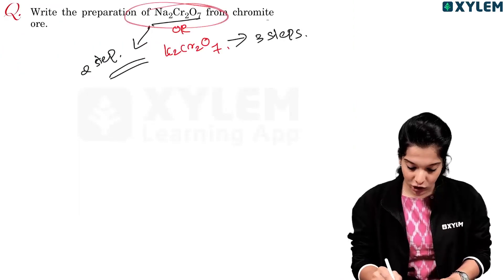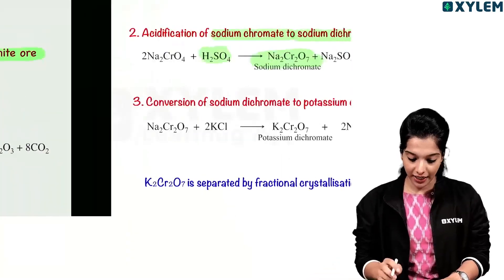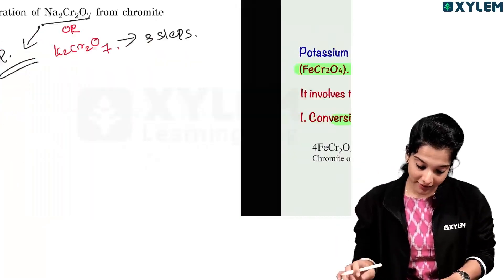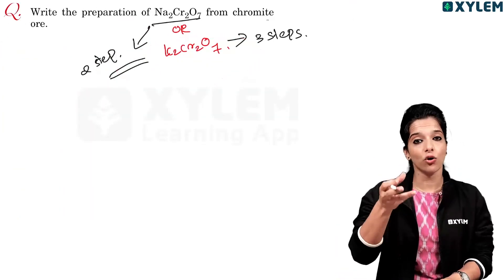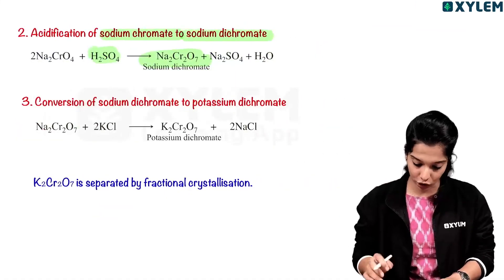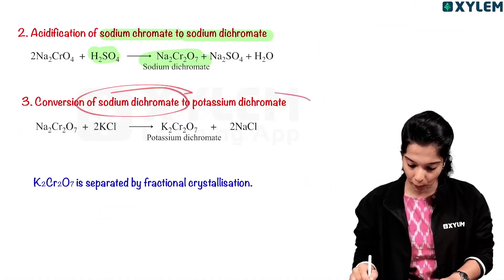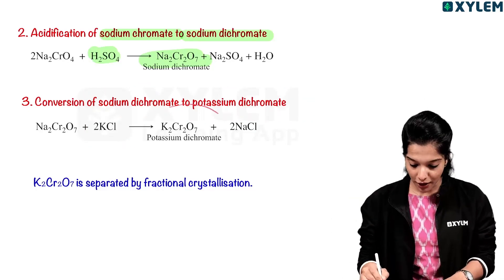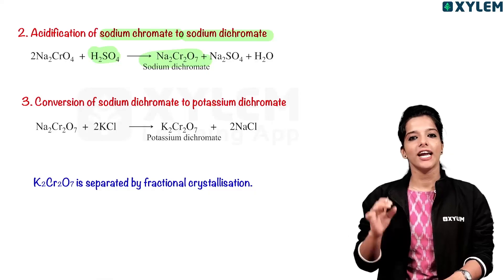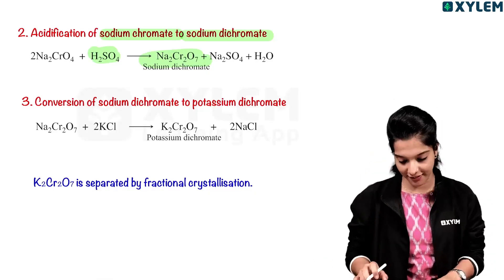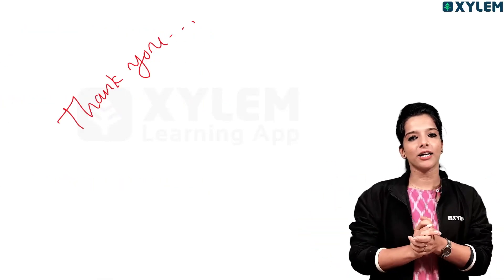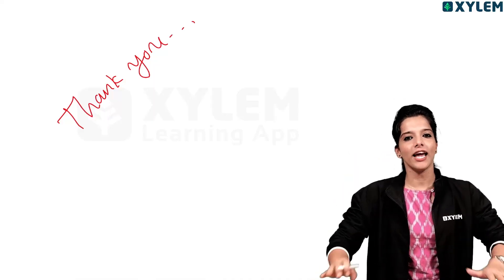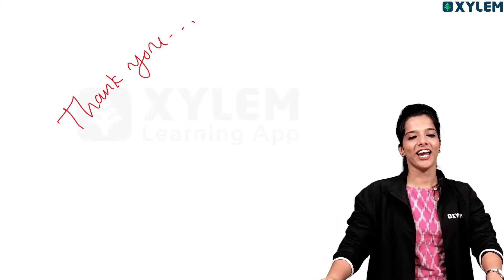We will stop at two steps for sodium dichromate. If potassium dichromate is asked, add the third step: conversion of sodium dichromate into potassium dichromate by adding KCl. These are the three steps. We discussed the most important questions on D and F block elements. Thank you.